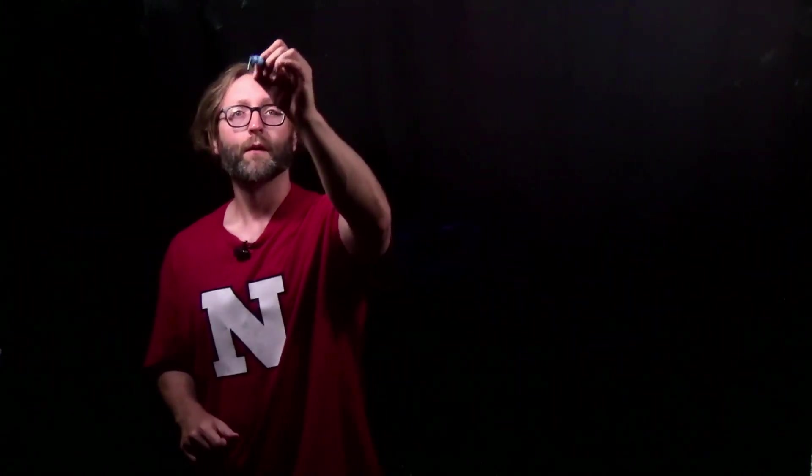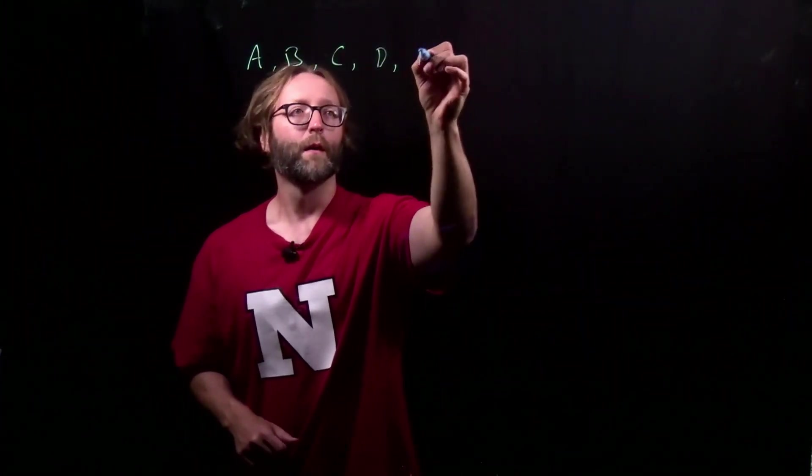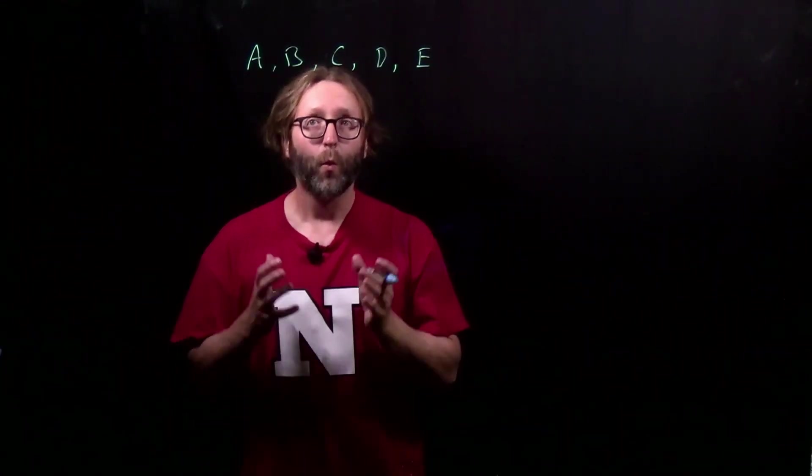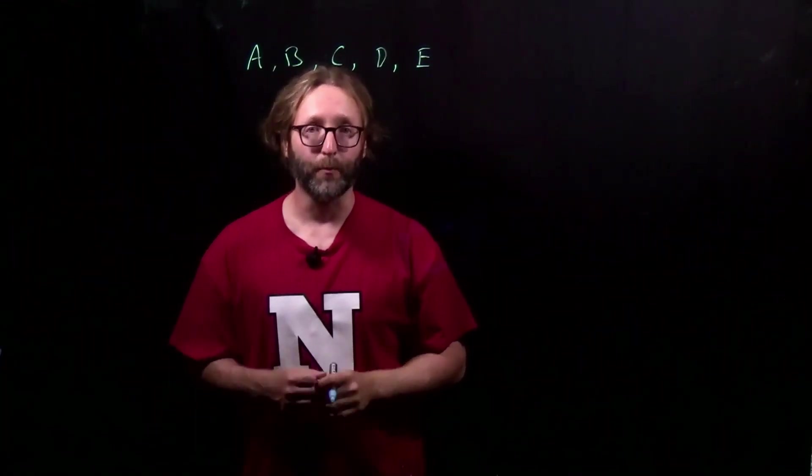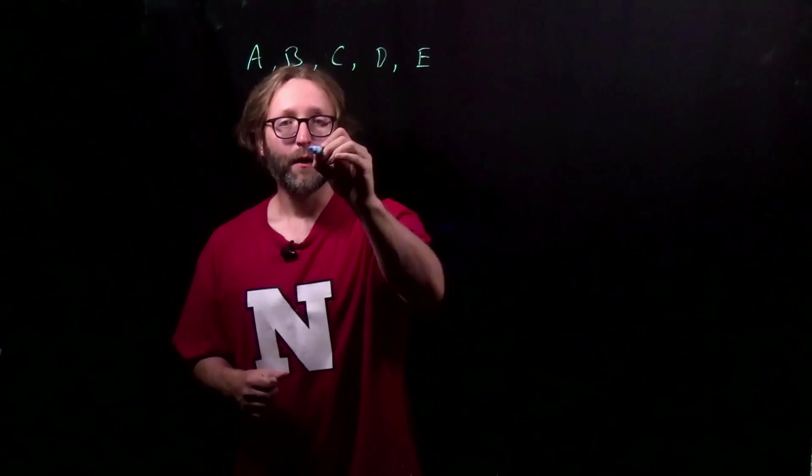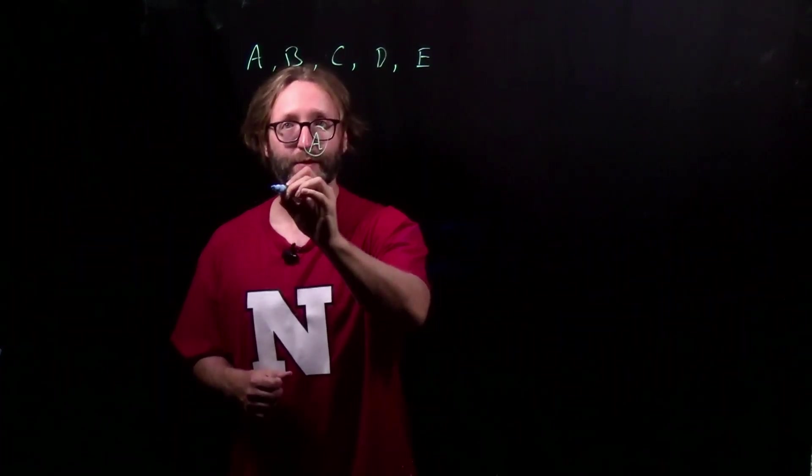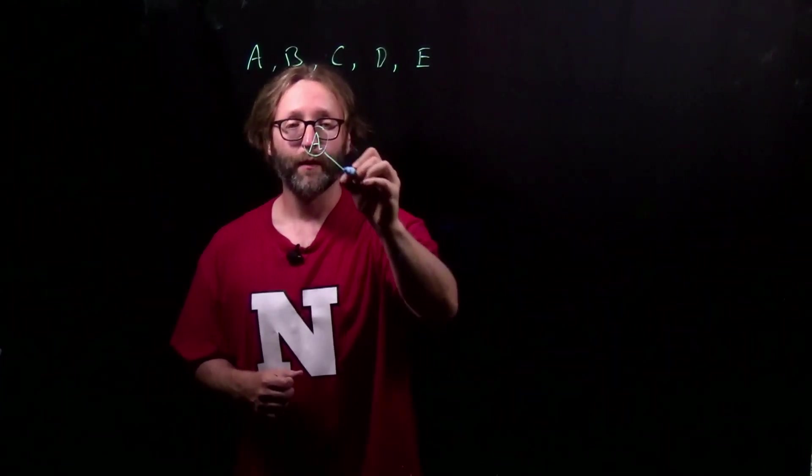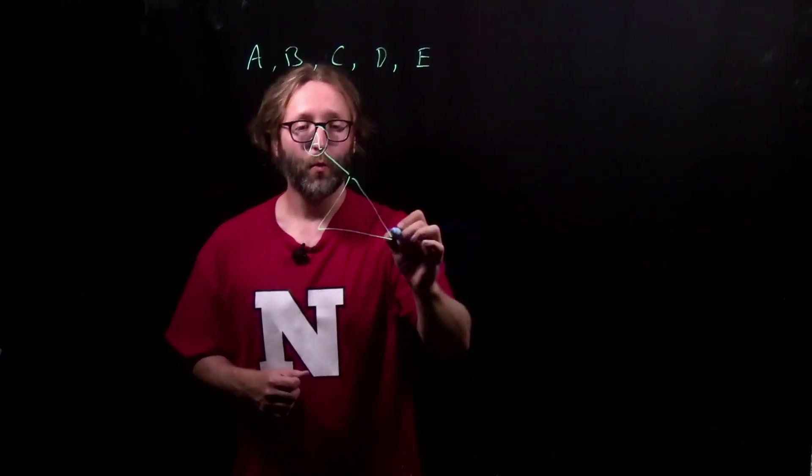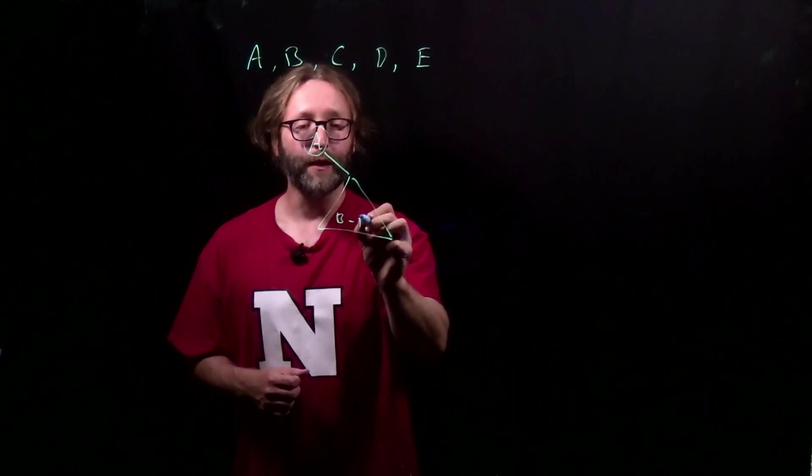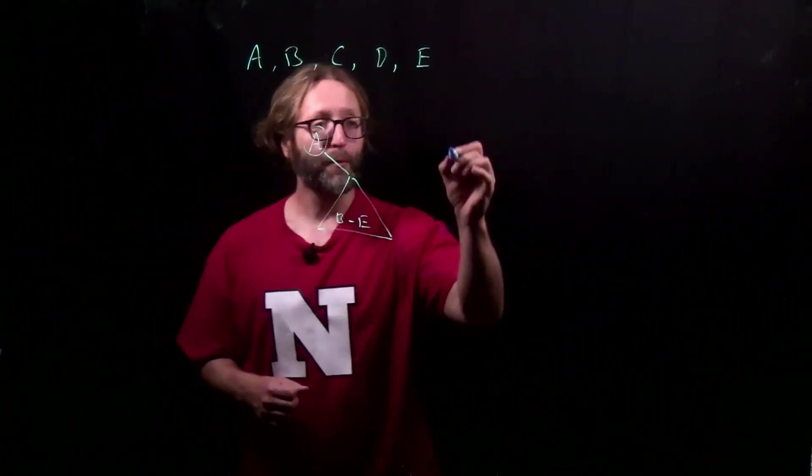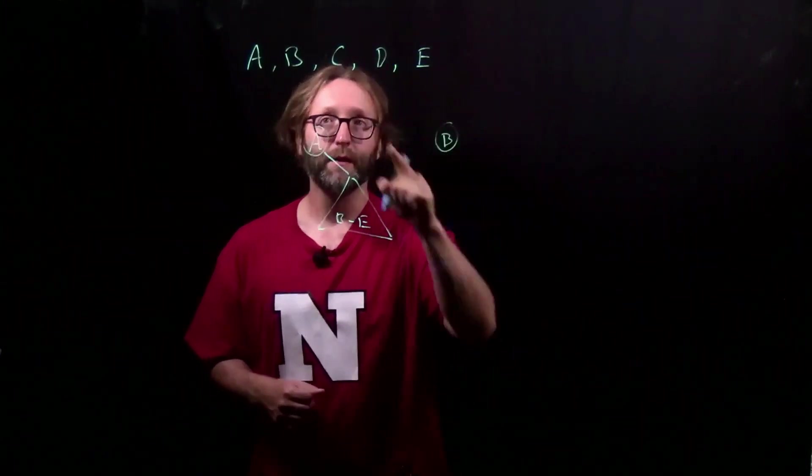Now to understand our approach to this, let's consider five keys. Now if I want to put these in a binary search tree, one of these keys is going to have to be my root. If I choose A to be my root, then that means that the left subtree will have no keys, because remember these are ordered. And the right subtree will have all the keys B through E. That's one possibility.